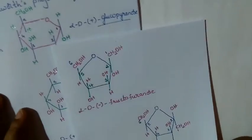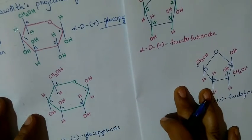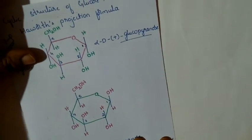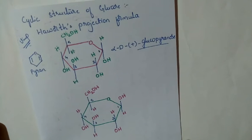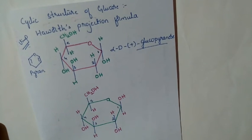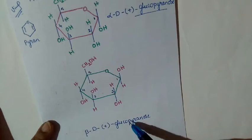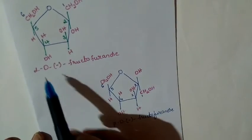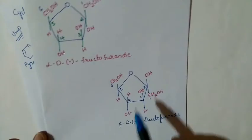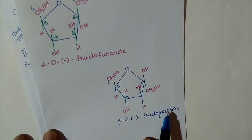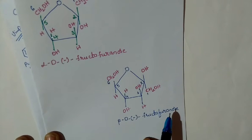This is the cyclic structure of glucose and this is the cyclic structure of fructose. We will go through the cyclic structure of glucose first. We discussed alpha D-plus glucopyranose and beta D-plus glucopyranose in yesterday's class. Likewise today we have alpha D-minus fructofuranose and beta D-minus fructofuranose. By this we have completed the first part of carbohydrates in biomolecules.